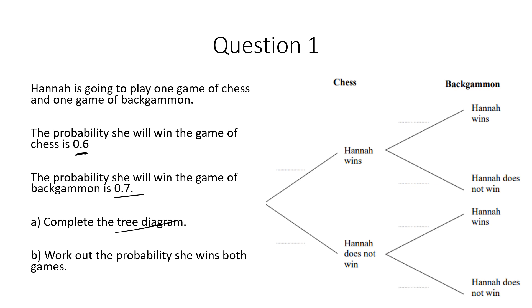So this is where a probability tree is useful. It can be useful because it helps you to figure out the probability of more than one independent event occurring. So by independent event I mean an event that cannot be influenced by another event. So for example here it doesn't matter whether Hannah wins chess. That's not going to influence the probability of her winning the backgammon.